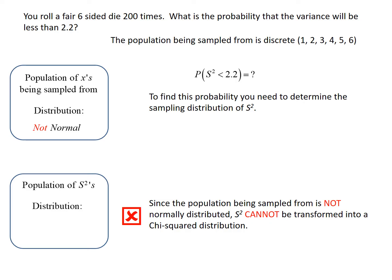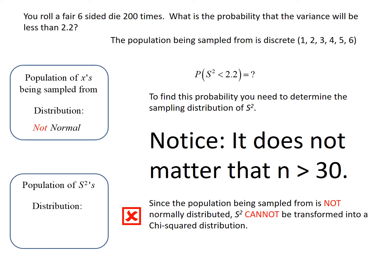Not only do we not know how s-squared is going to behave by itself, but if we adjust s-squared by multiplying by n-1 and dividing by sigma-squared, that is not going to behave like a chi-squared distribution. Notice: sample size is 200, which is way bigger than 30, but that's totally irrelevant when it comes to s and s-squared. With x-bar, a sample size more than 30 would make it approximately normal — but we're looking at s-squared. The distribution of s-squared is not related to a chi-squared distribution; we cannot use our equation to transform this probability statement, and we simply can't do this problem with the tools we have in this class.